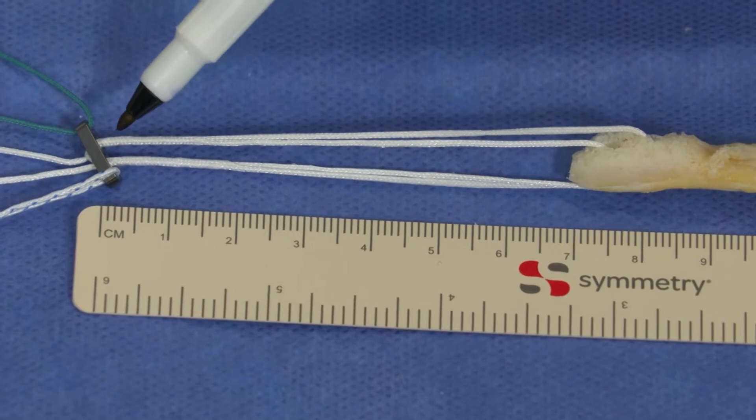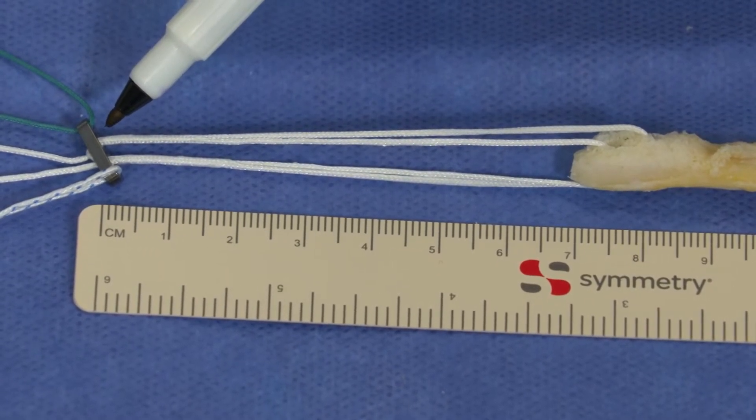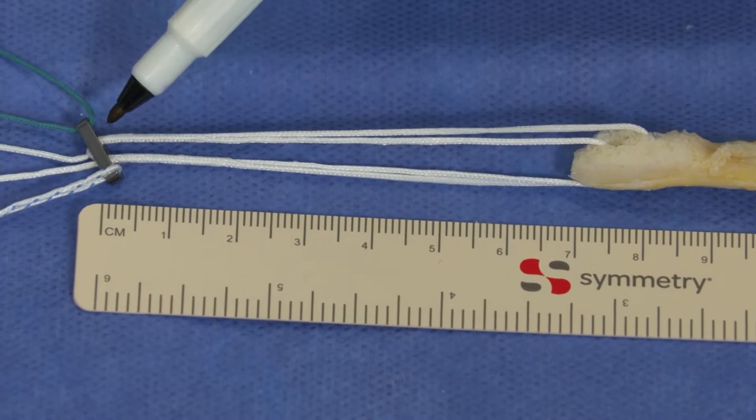It's important now to mark what that length was for your lateral aspect of the femur, the entire bone bridge, in order to know where to flip the button.